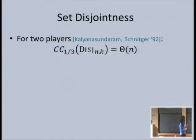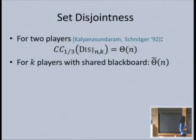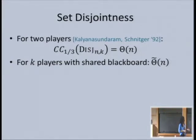What do we know about this problem? There's the famous Ω(n) lower bound, which is optimal for two players. In recent years, there's been interest in this problem for multiple players with a shared blackboard because of applications in streaming. In the shared blackboard model, it's trivially Ω(n) by reduction from two players, and it's also O(n log n)—whether this log factor is necessary, I don't know.